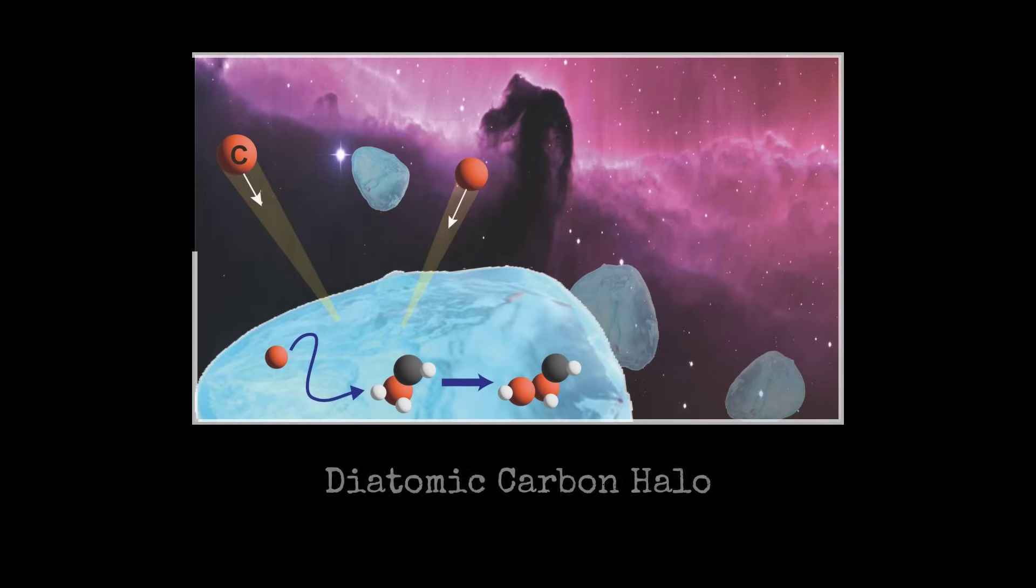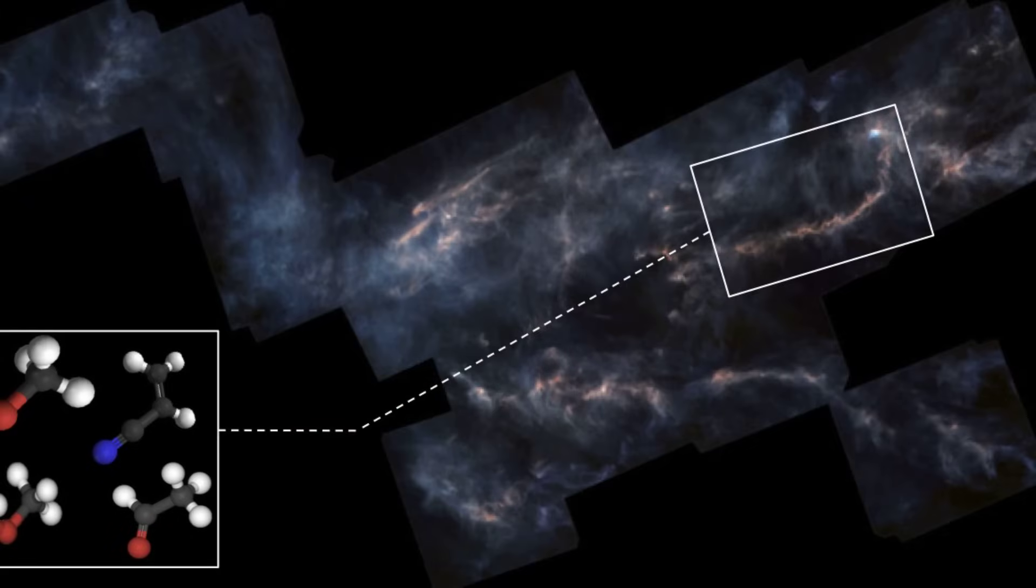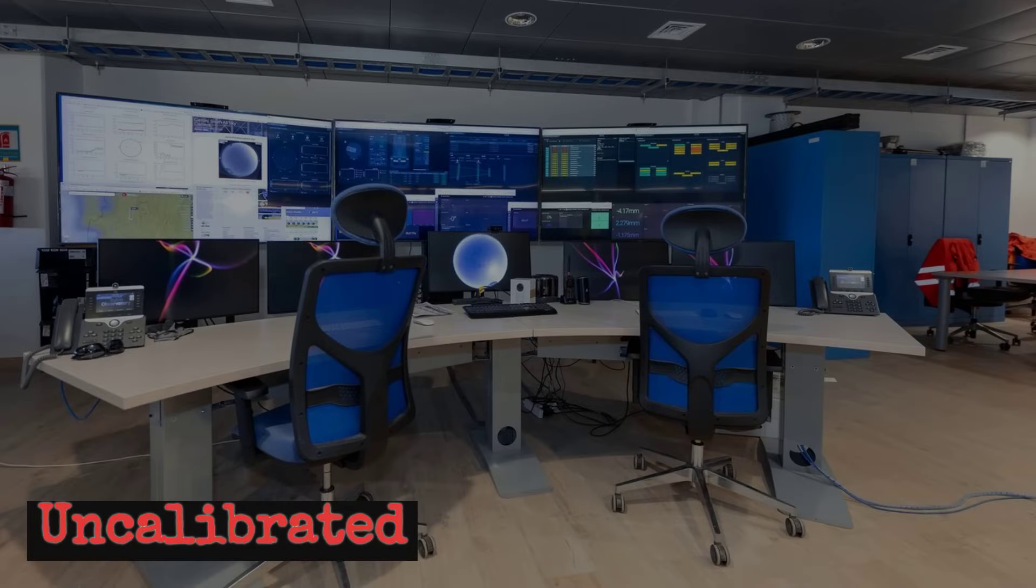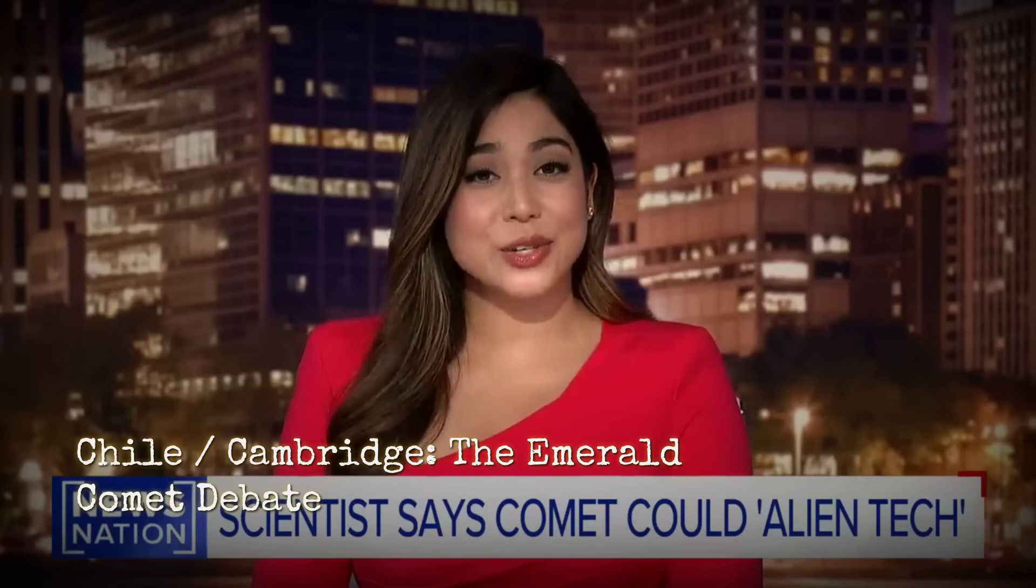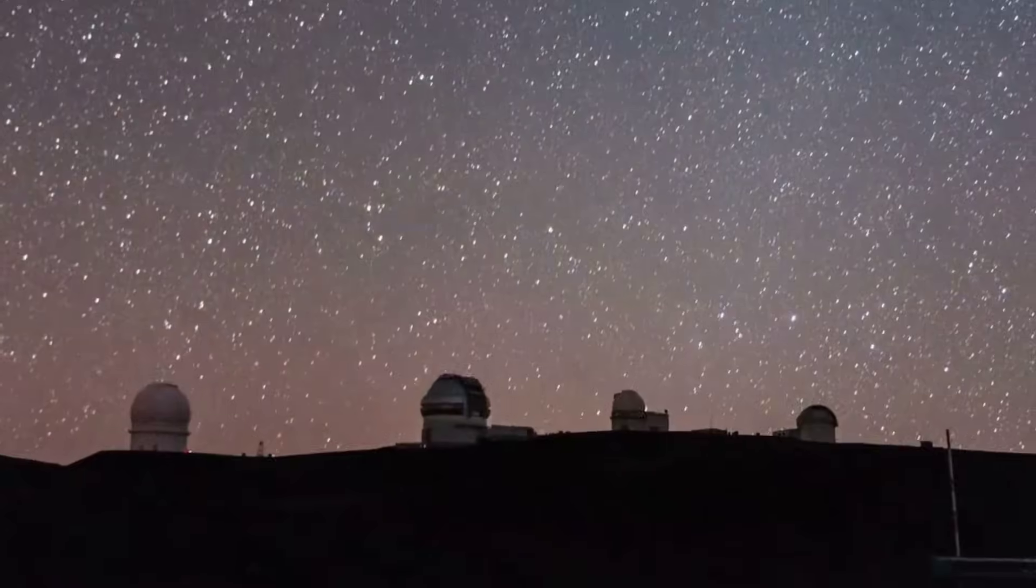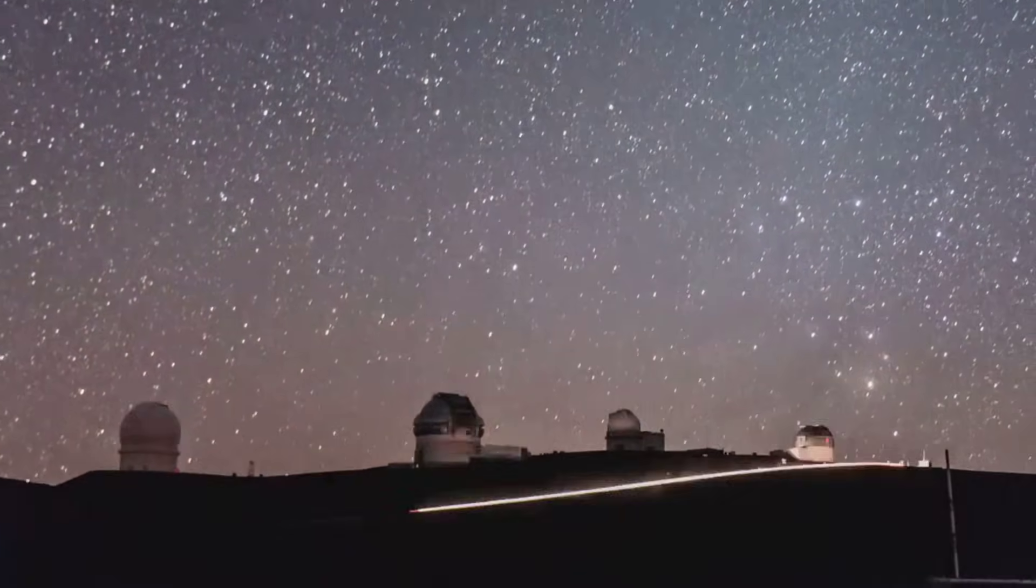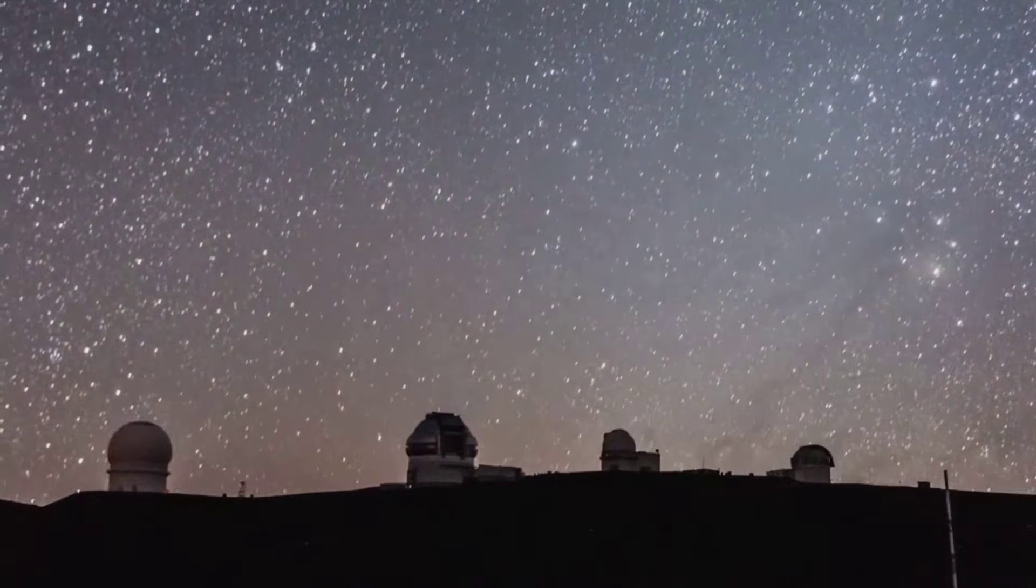Theories circle in real time. Diatomic carbon, perhaps, or some exotic chemistry unique to interstellar ice. Yet, without calibrated spectra or peer-reviewed data, the cause remains elusive. For now, the green glow is a riddle, its meaning debated from Chile to Cambridge, as every instrument races to keep up with a comet that refuses to fit any mold.